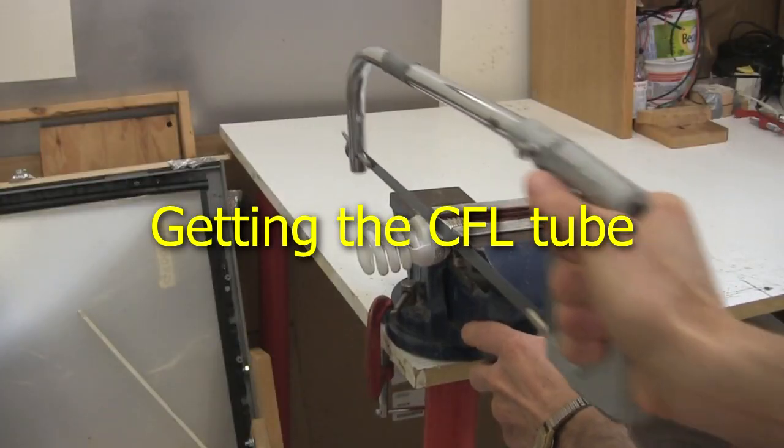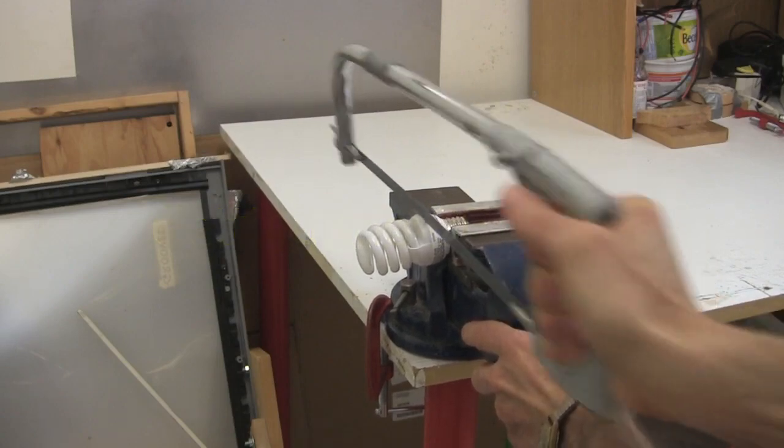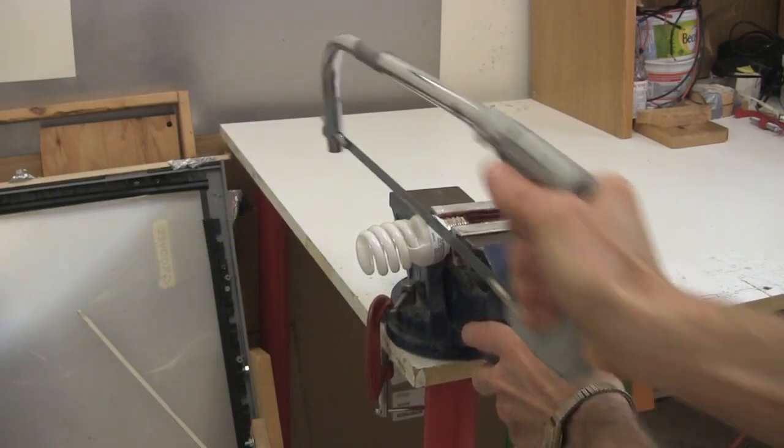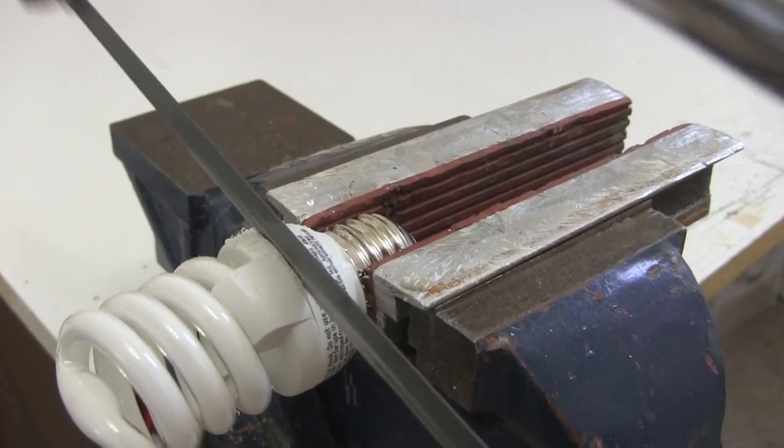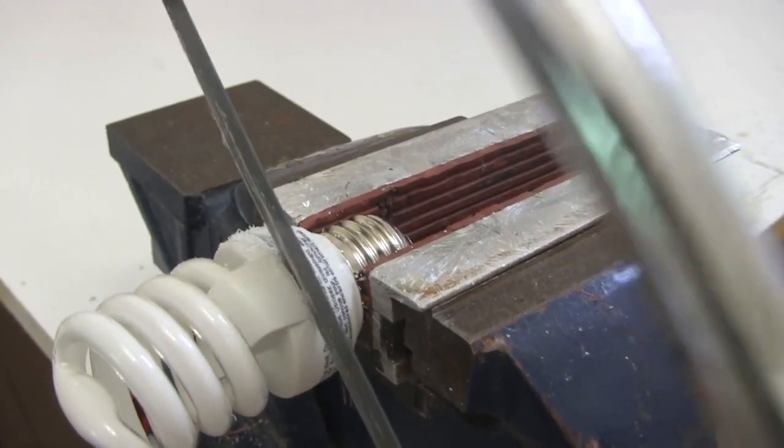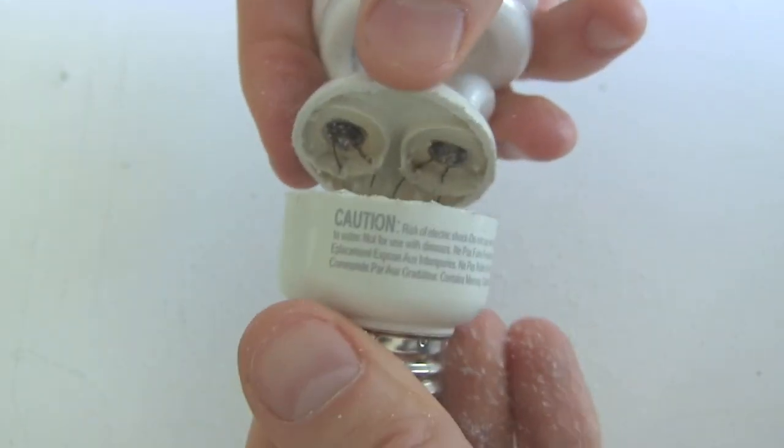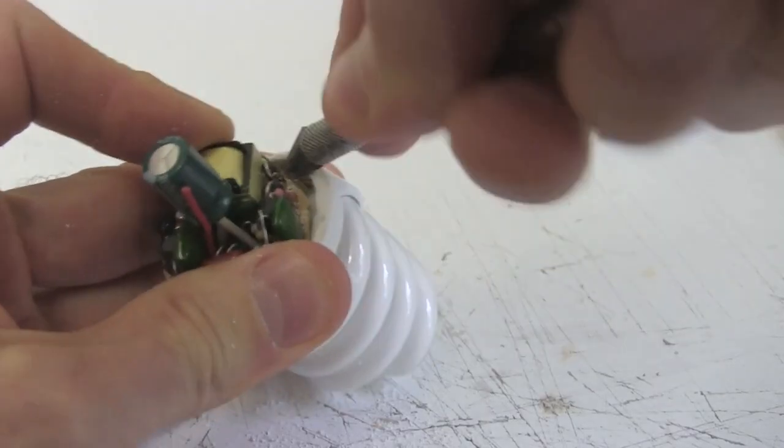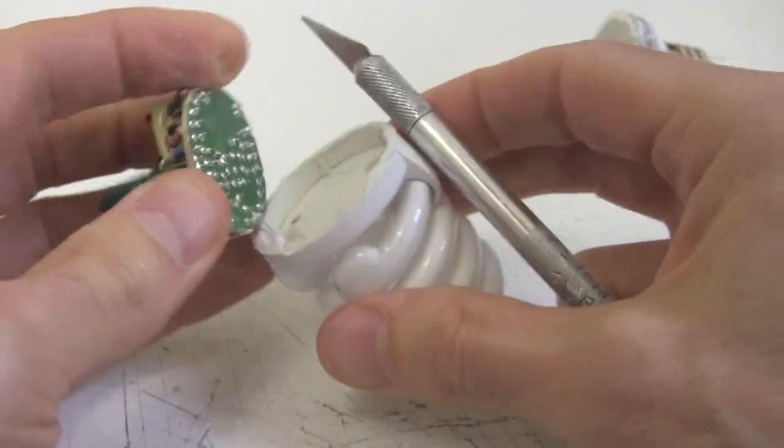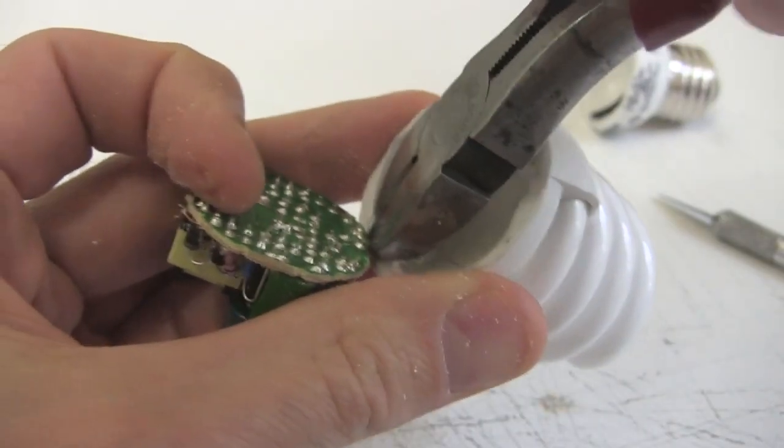The first step is to open up the compact fluorescent light bulb. Sometimes you can pry them open but most of the time you have to cut them, being careful not to cut too deeply or damage anything inside. Opening it up you'll either see some electronics like this or just some thin wires like this. In either case cut the wires so that you leave as long a length as possible going to the fluorescent light tubes.